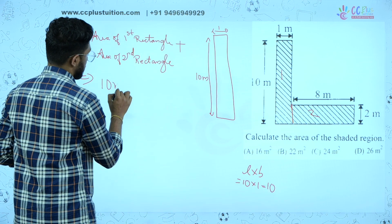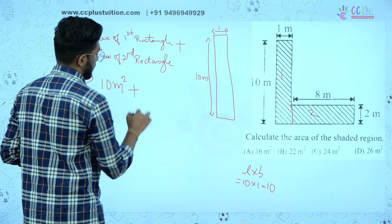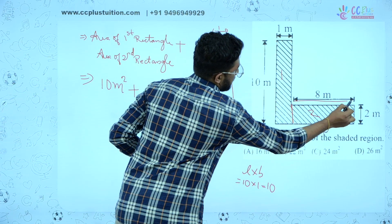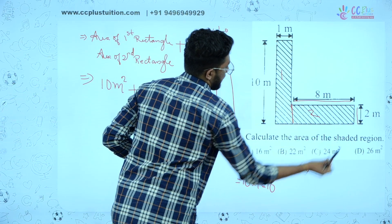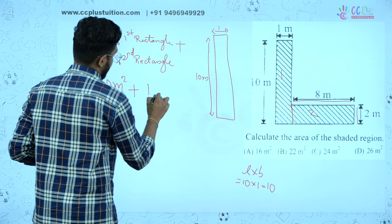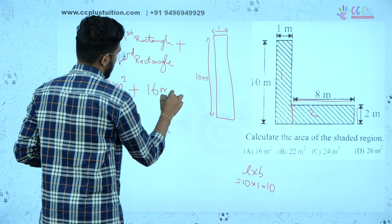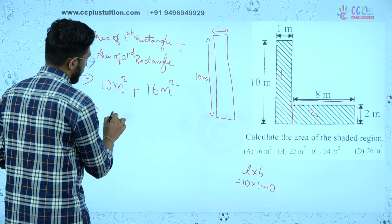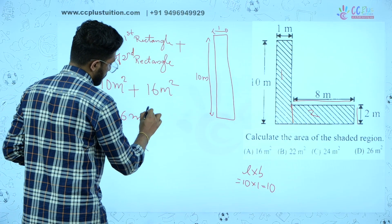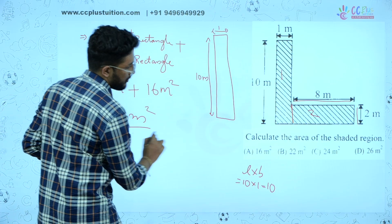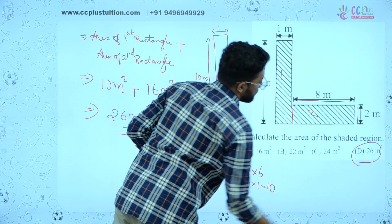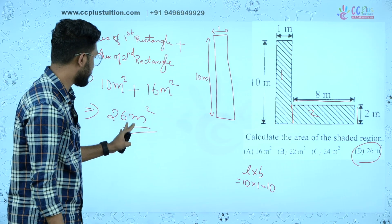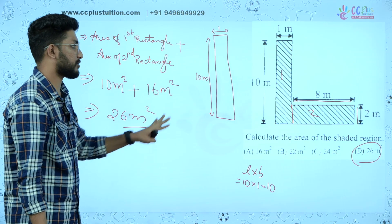You get 10 meters squared, plus 8 into 2 is 16 meters squared. So if you add the two, it's 26 meters squared. Option D: the answer is 26 meters squared.